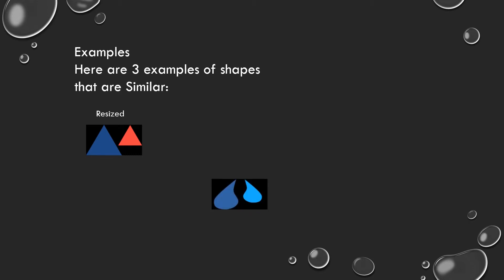The two triangles are similar. In the next example, we can see the water droplets — here it is resized and reflected. That means one is the mirror image of the other. One size is bigger and the other is smaller, but it is a reflected image. Then also we can see they have similarity because the shape is the same. In the next example, you can see the pentagon — it is rotated. Here resized and rotated: the size is different and also the position is rotated, but we can say these two figures are similar. So if it is resized, reflected, or rotated, if it has the same shape, we can say the two figures are similar.